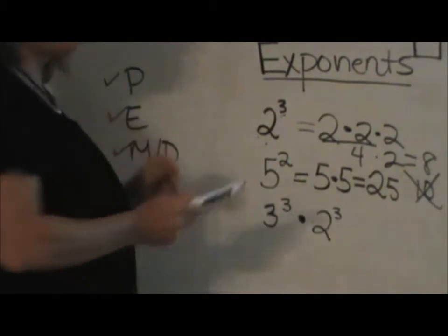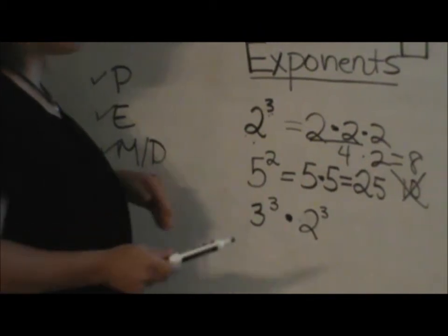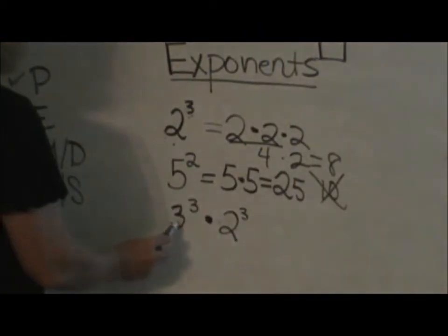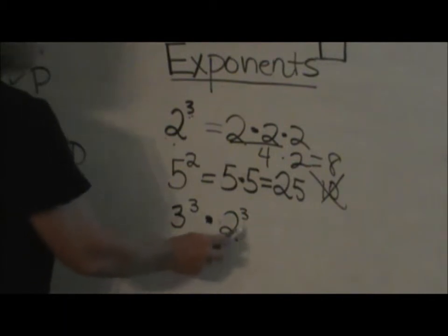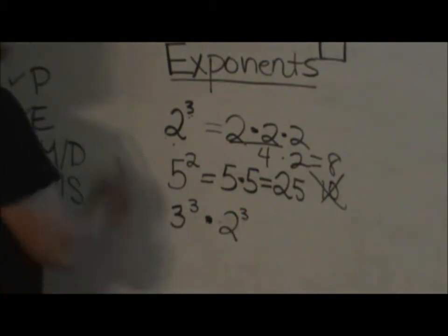So I put up on the board an example of exponents with multiplication in there. So we have 3 cubed times 2 cubed. What we're going to do first, because of the order of operations, we're actually going to do the cubing before the multiplying.